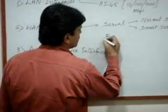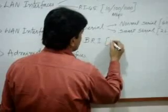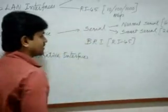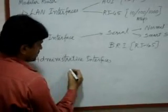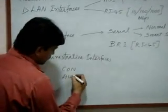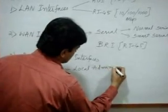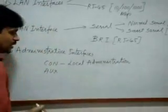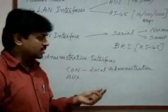Another WAN interface is the BRI — Basic Rate Interface — which is used for ISDN lines. The BRI is an RJ45 port specifically for ISDN connectivity. Next, we have administrative interfaces. There are two types: the console port and the auxiliary port. The console port is for local administration.